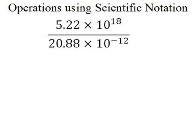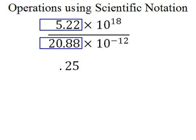So we're going to do 5.22 divided by 20.88. And we're going to ignore the powers of 10. So 5.22 divided by 20.88 is 0.25.